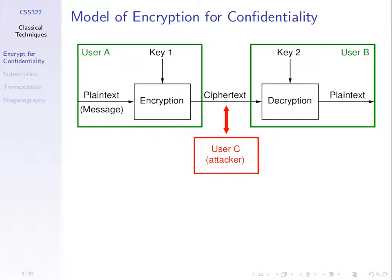The plaintext B gets after decryption must be identical to the plaintext A encrypted, otherwise we haven't achieved our goal. That depends on how the encryption and decryption algorithms work, and on what the keys are and how they are used.